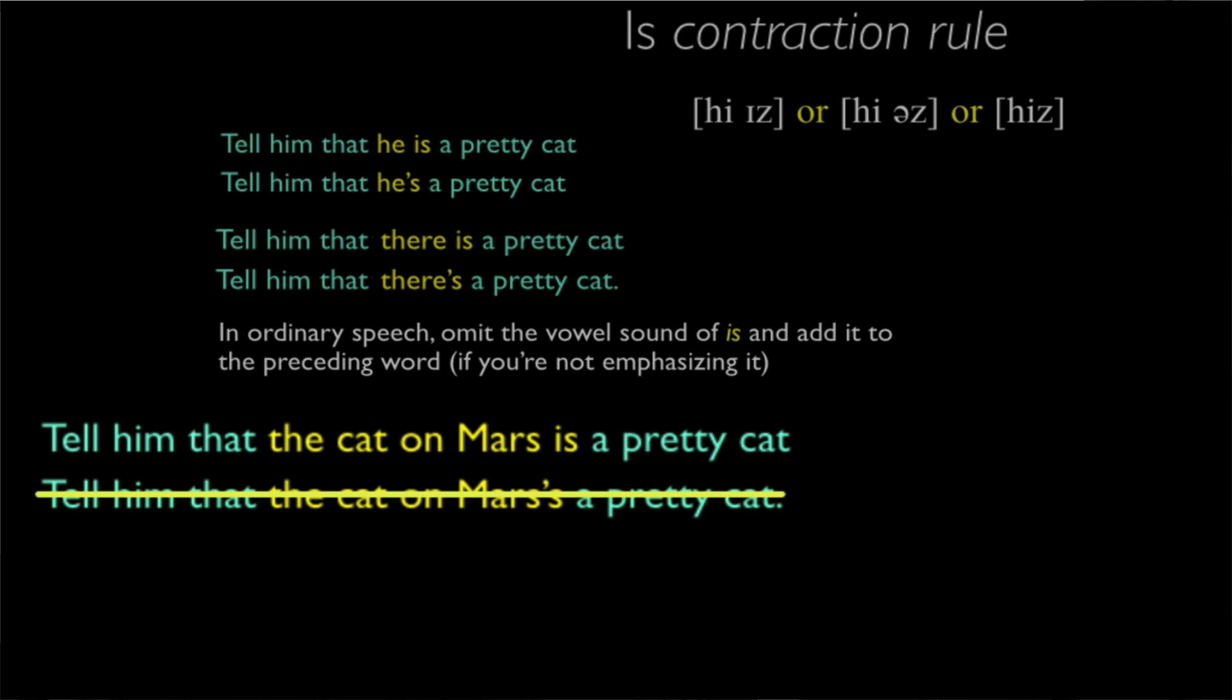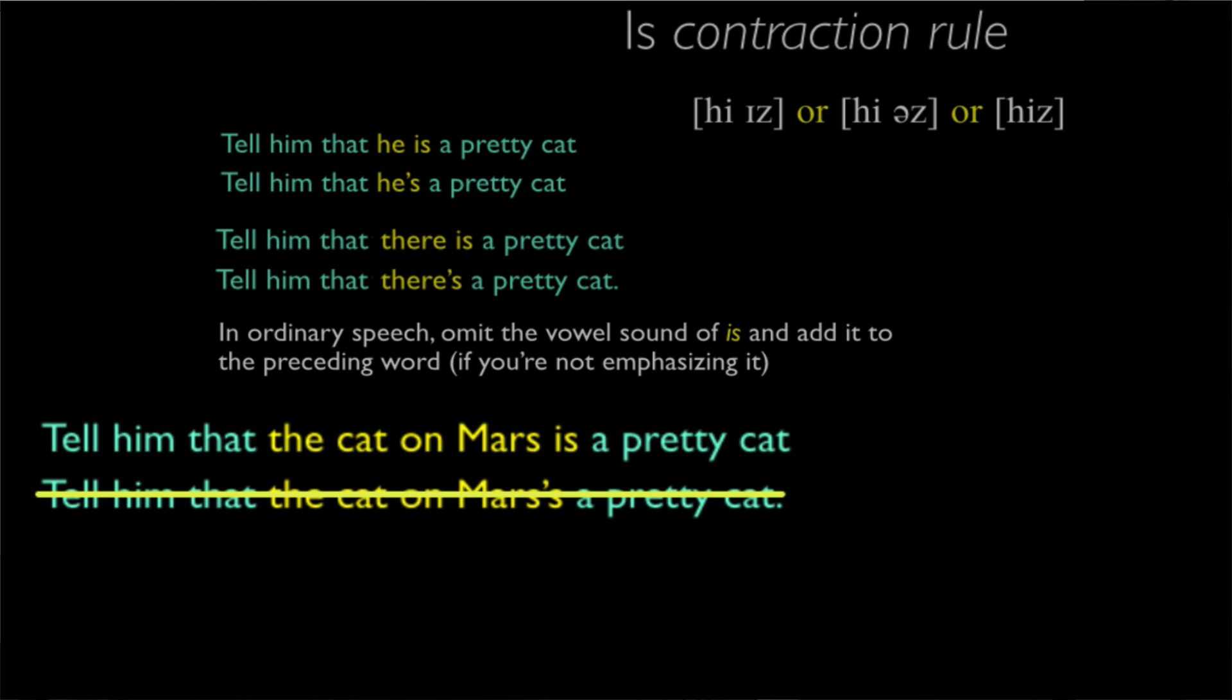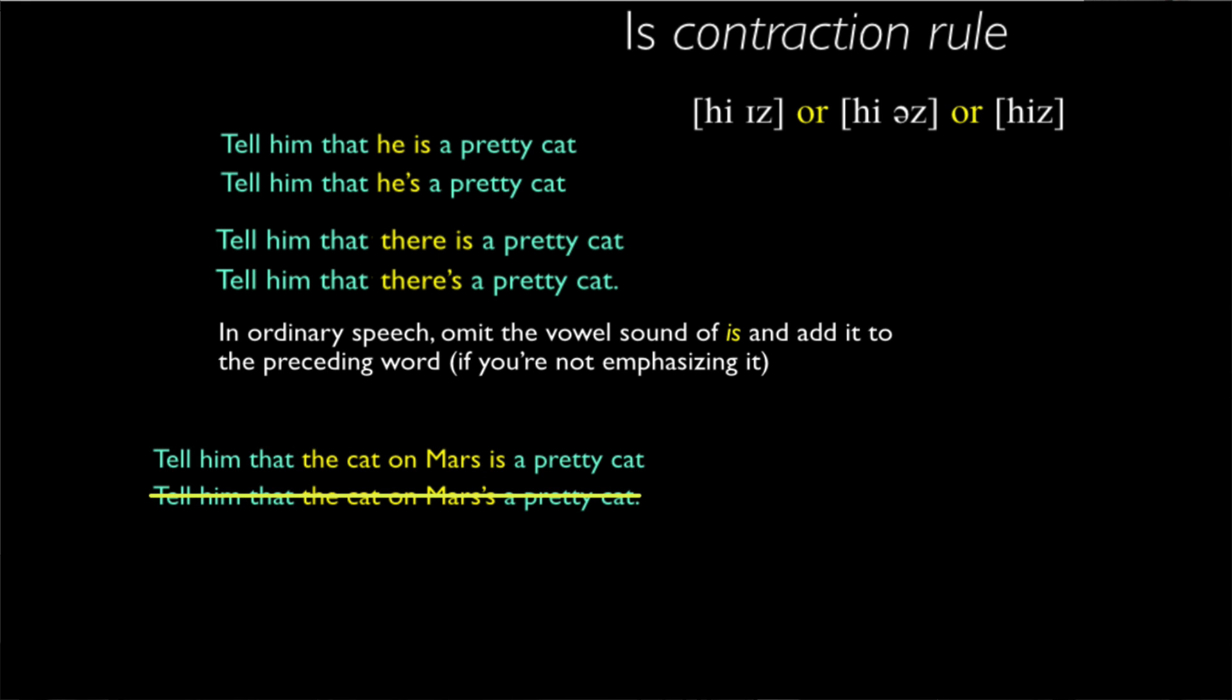Because the last sound of 'Mars' and the last sound of 'is' are the same. And if we put them together, we wouldn't know that 'is' is there. So the rule has to be modified to include a constraining condition.